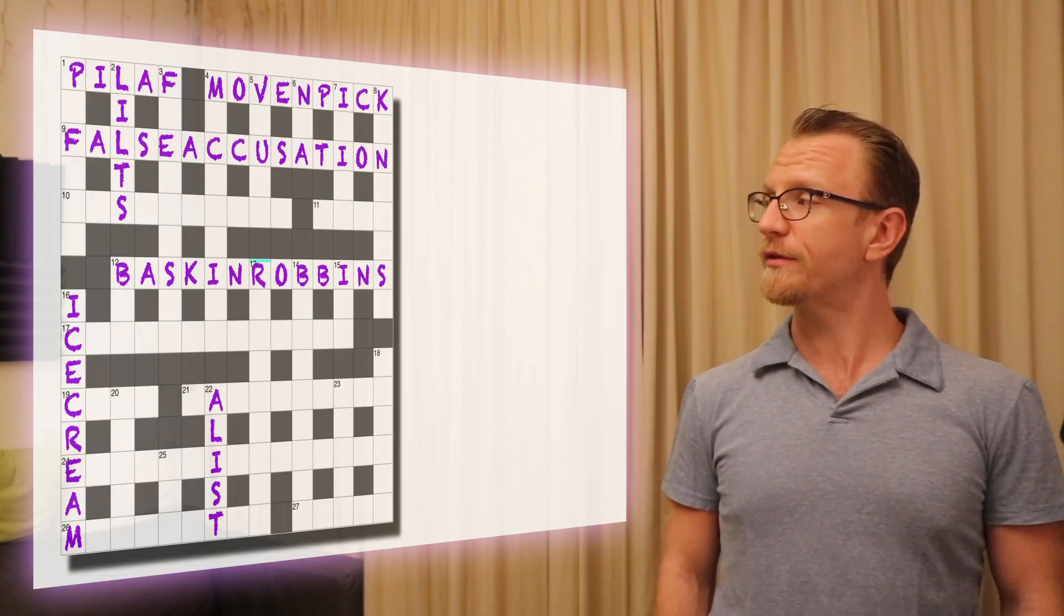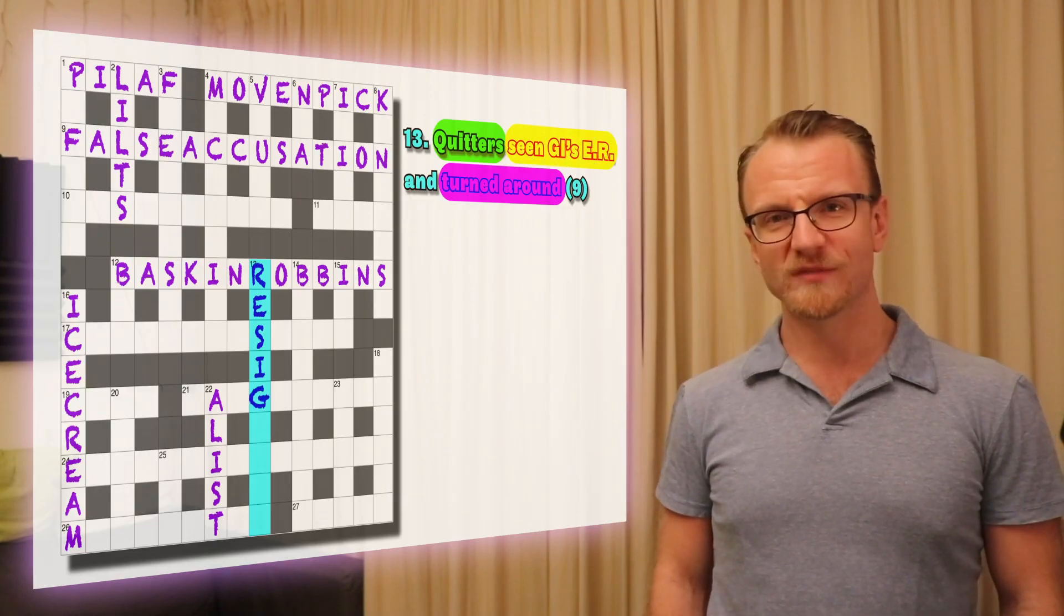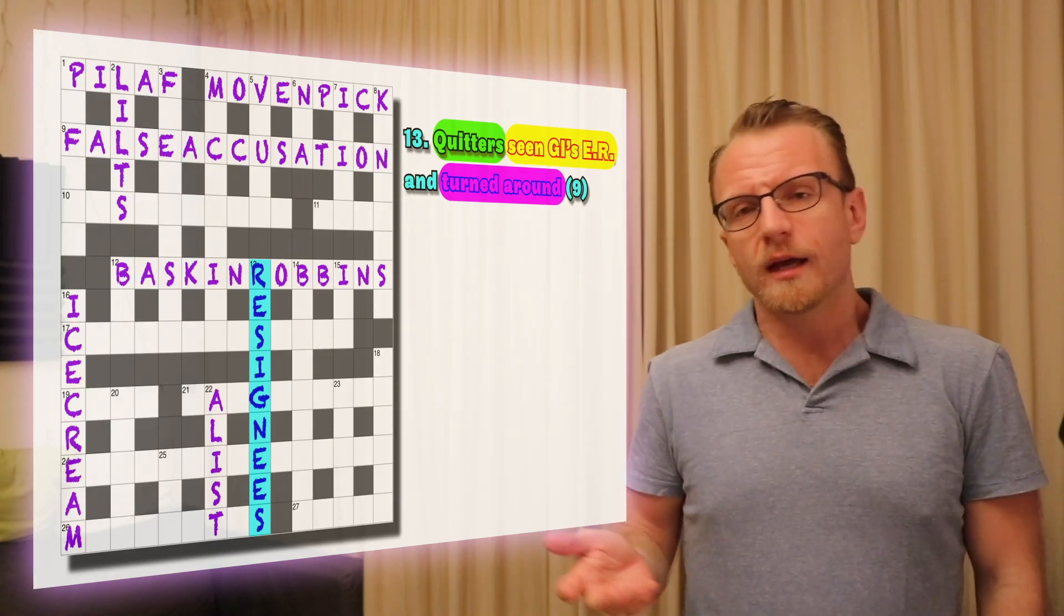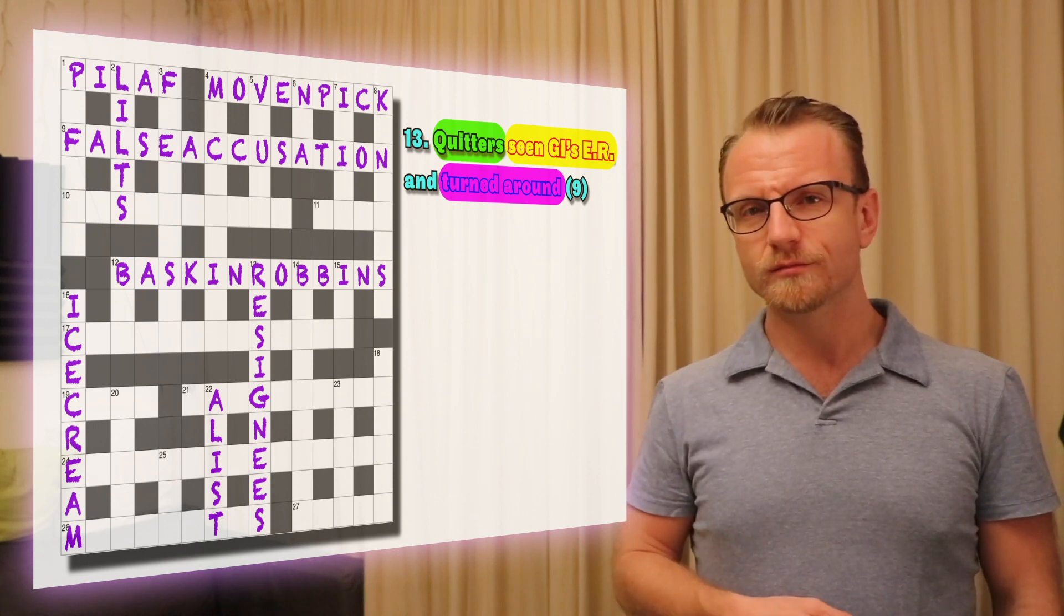So going to our master grid, we've got 13 down, which is where the reversal is. With turnaround given at the end, we know that quitters must be the literal. And we know that it starts with an R. So just look until you see it. It's there. It's resignese. I had to include a reversal. This was the only place to do it. It's a bit forced.